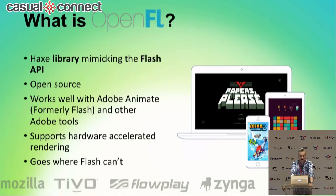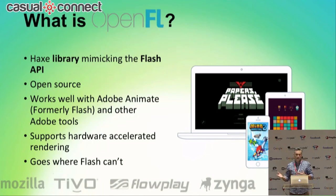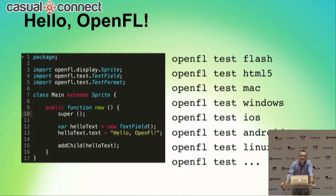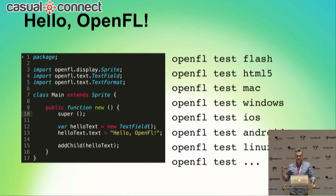When I say it has a Flash-like API, what I mean is that it has the same class hierarchy and class interfaces as Flash, and code written in ActionScript can be ported to Haxe OpenFL with minimal changes. This is an example of a simple program written in Haxe using OpenFL. It should feel very familiar to any Flash developers in the audience. But this program can be output to more than just a SWF.